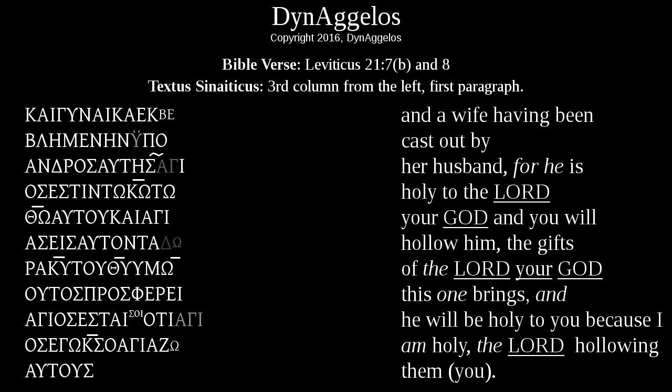Remember that a line is placed over letters to show they are the remaining letters from a word that was shortened. If we look at the fourth line down from the top, we see a line over two letters: Kappa and Omega. Kappa is the first letter of the word, and Omega is the last letter of the word. The first letter shows us what word is being used, and the last letter shows how the word is being used in the sentence — because in Greek, the ending of a noun, verb, or adjective tells you its grammatical role.